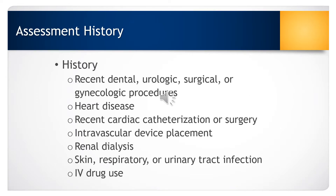When suspecting infective endocarditis, we want to obtain a thorough health history, asking about any recent invasive procedures including dental, urological, surgical, or gynecological procedures. We want to know about their cardiac history, any recent cardiac catheterizations or heart surgery, whether any intravascular devices such as a PICC line or central venous catheter have been placed, if they are a renal dialysis patient, and if they have had any recent infection including skin, respiratory, or urinary tract infections.